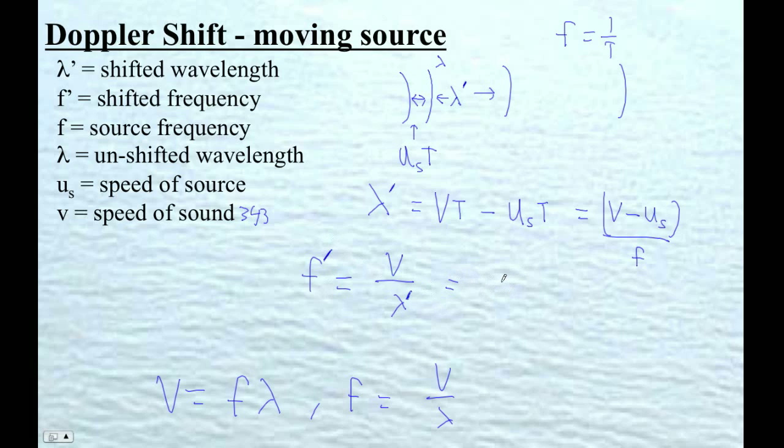So that's going to be the speed of sound divided by this thing. So I'm going to multiply by the reciprocal of this, so I'm going to go v times f over v minus us. And that's our formula right there. That the shifted frequency is the original frequency times v over v minus the speed of the source.